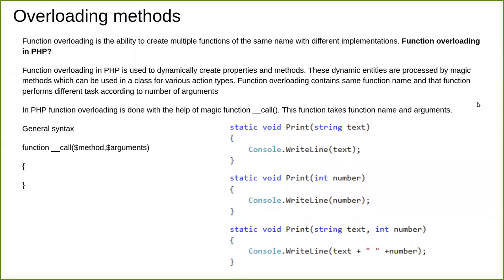In this video we are going to see overloading methods in PHP. What is meant by overloading? The function name will be the same, but depending upon the type and number of arguments, the compiler will automatically find which function to call. The compiler will correctly find out which function it has to execute even if the name is the same, depending upon the signature — that is, the parameters and their types.